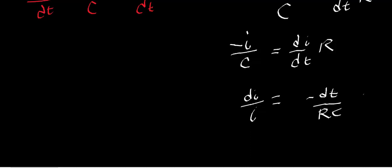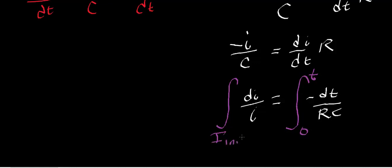Now we have a differential equation with all the i's on the left side and all the t's on the right side, so we can integrate. The bounds for time go from zero to some time t. For current, the bounds go from the initial current — capital I, the maximum current — to some instantaneous current i.